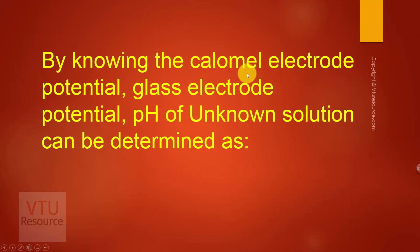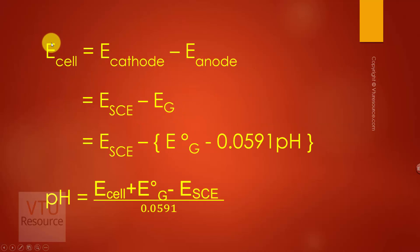By knowing the calomel electrode potential and glass electrode potential, the pH of unknown solution can be determined. The cell potential is given by E cathode minus E anode. The cathode is the calomel electrode and the anode is the glass electrode.